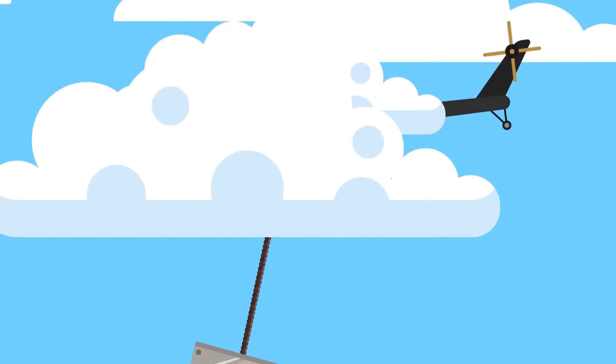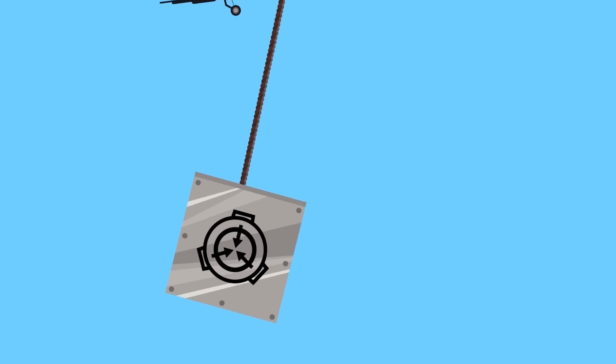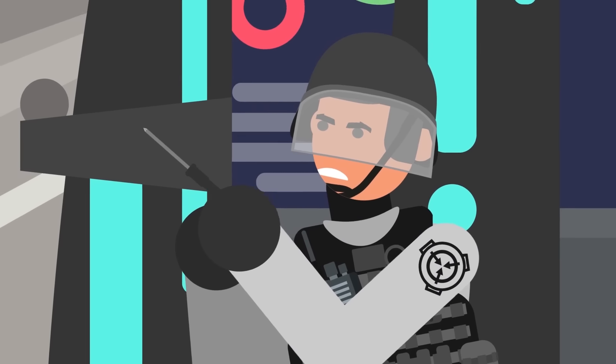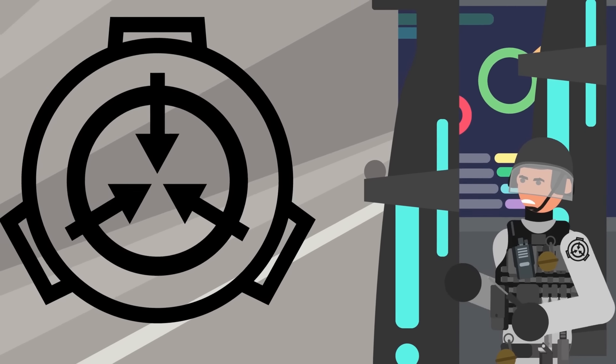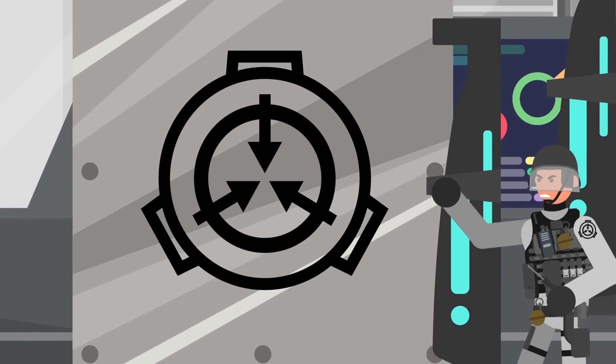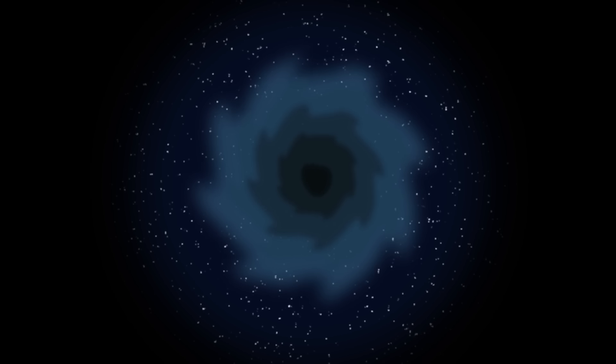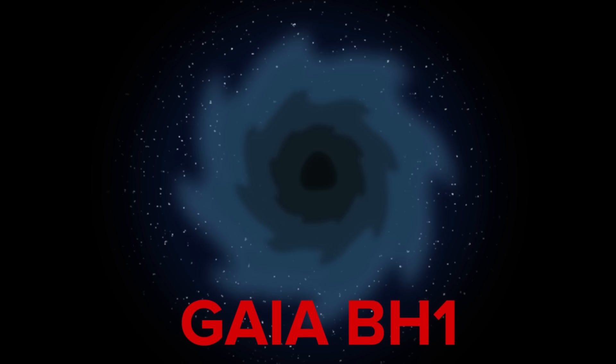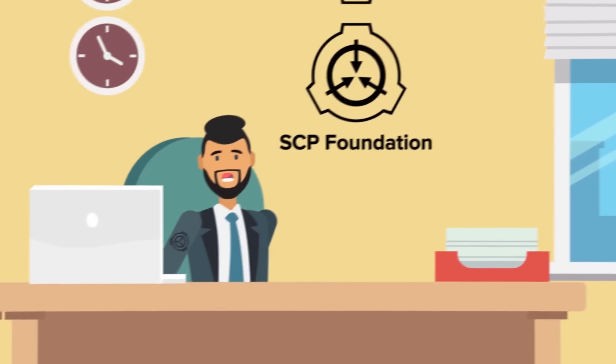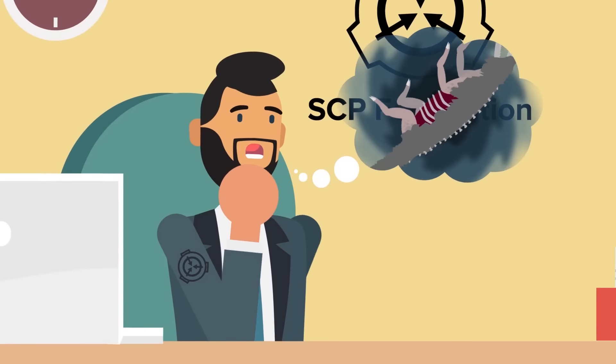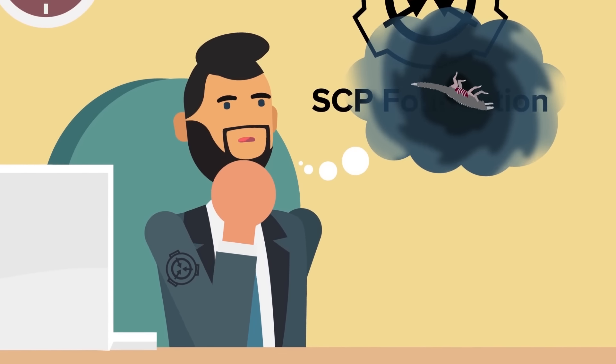This was in due part to the fact that as a Keter-class SCP, SCP-682 was difficult to transport across great distances due to the level of security required to contain it. Even so, if the required resources could be allocated to placing SCP-682's containment unit onto a spacecraft and sending it on a decisive course to the Gaia BH-1 black hole, the nearest black hole to Earth, it is quite possible that the hard-to-destroy reptile could be neutralized by merit of it being removed from all observable reality.